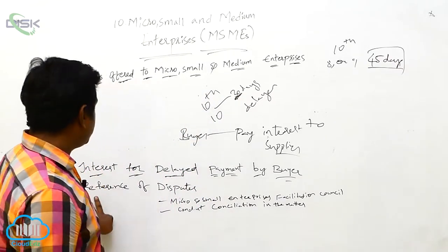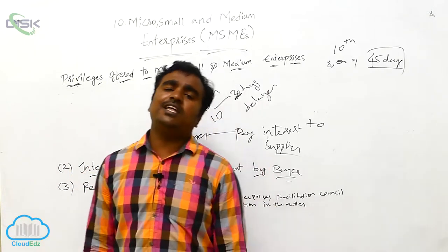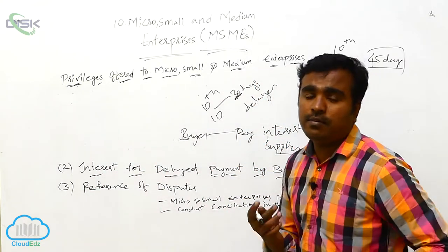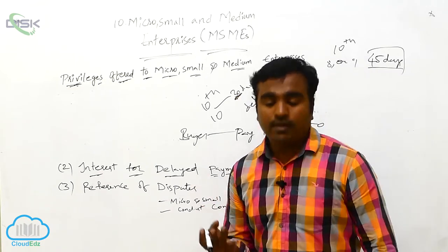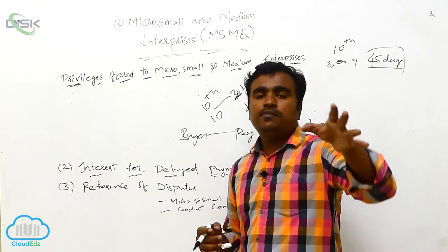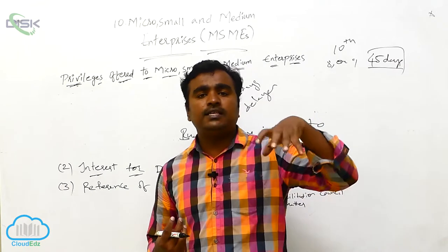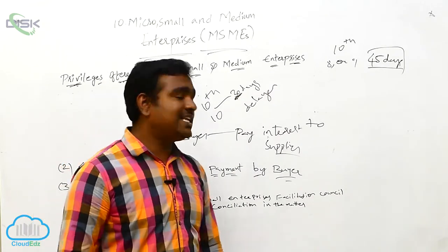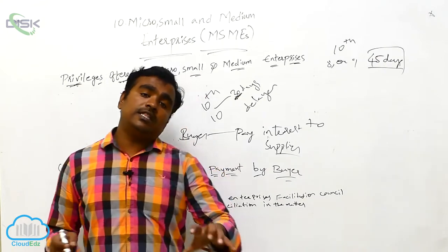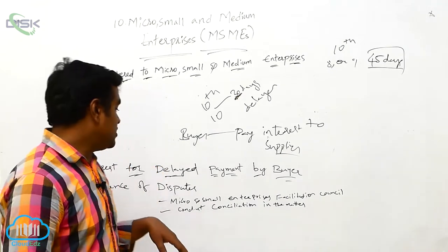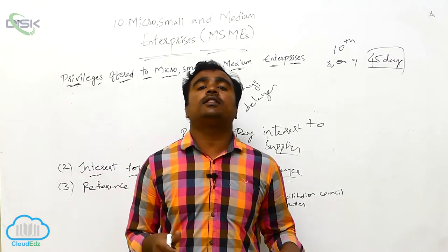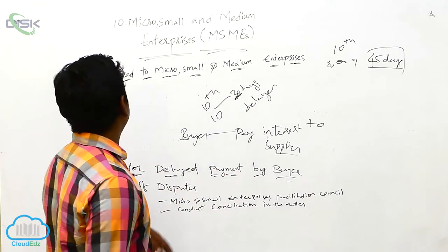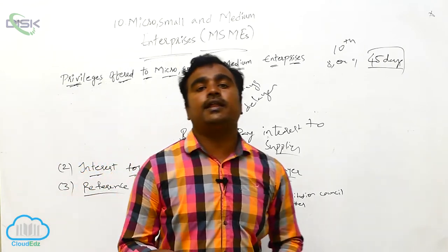The next privilege is reference of disputes. Because it deals with different types of people — there will be a buyer and a supplier — if any dispute occurs between them, there is a council called the Micro Small Enterprises Facilitation Council. If they get any dispute or case, this council will conduct conciliation in that matter. They will look into the matter and do the conciliation. So these are the 3 privileges given to encourage micro, small, and medium enterprises.